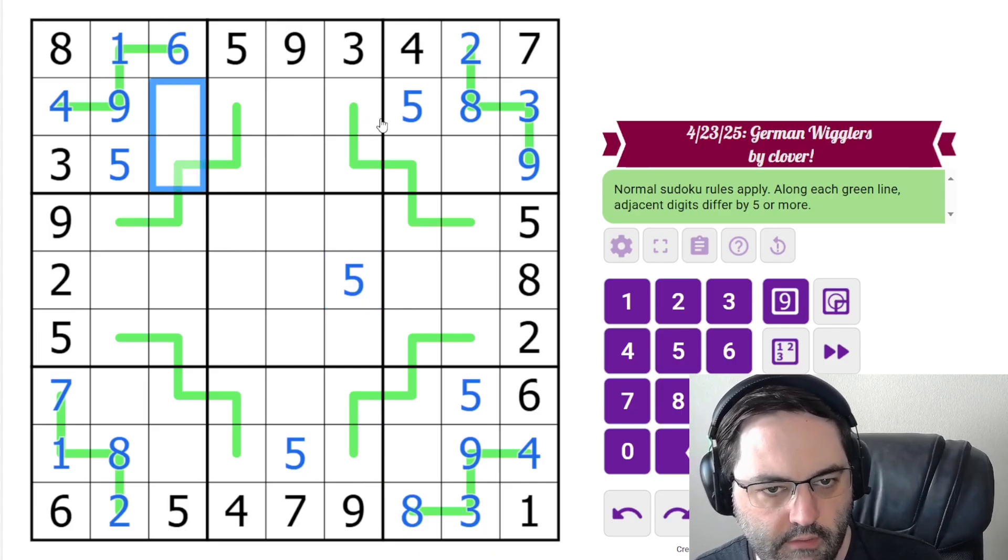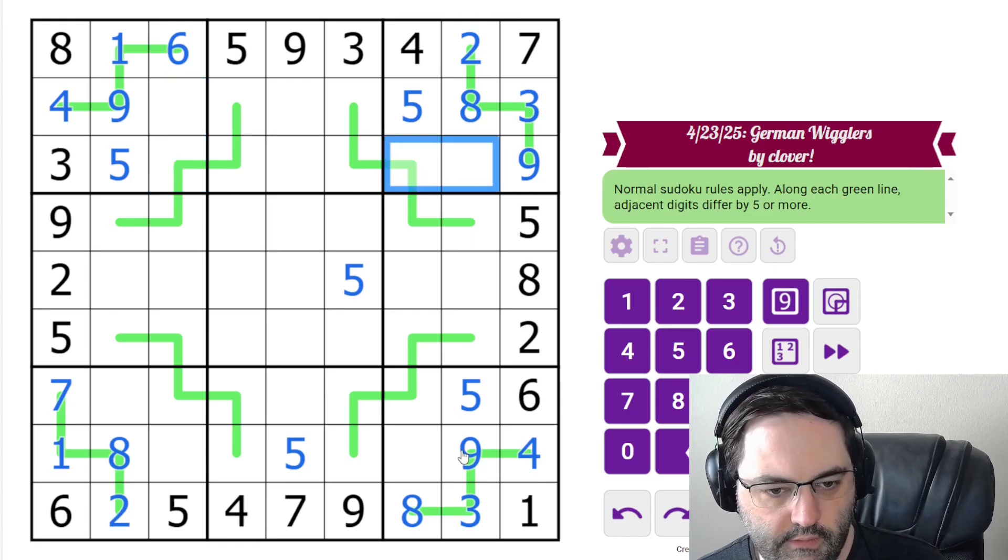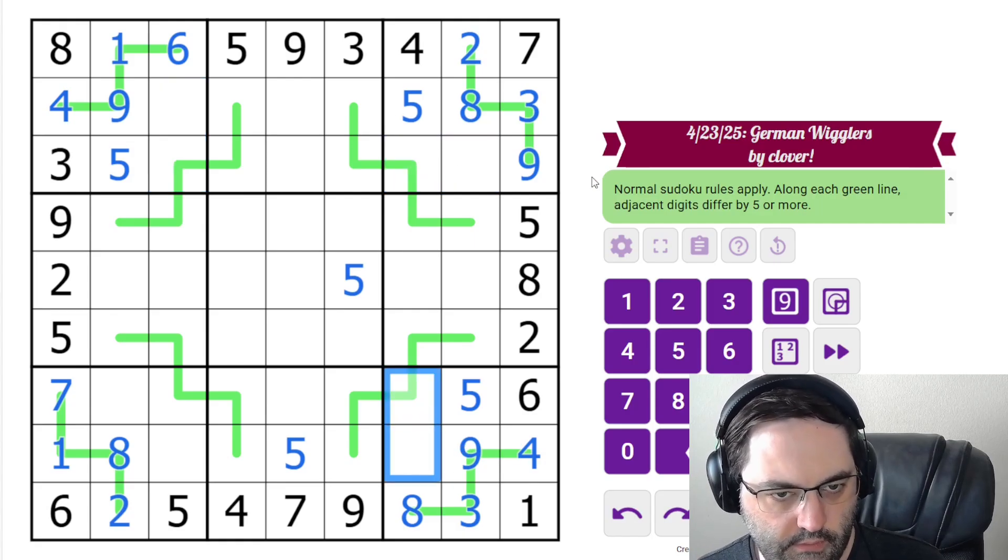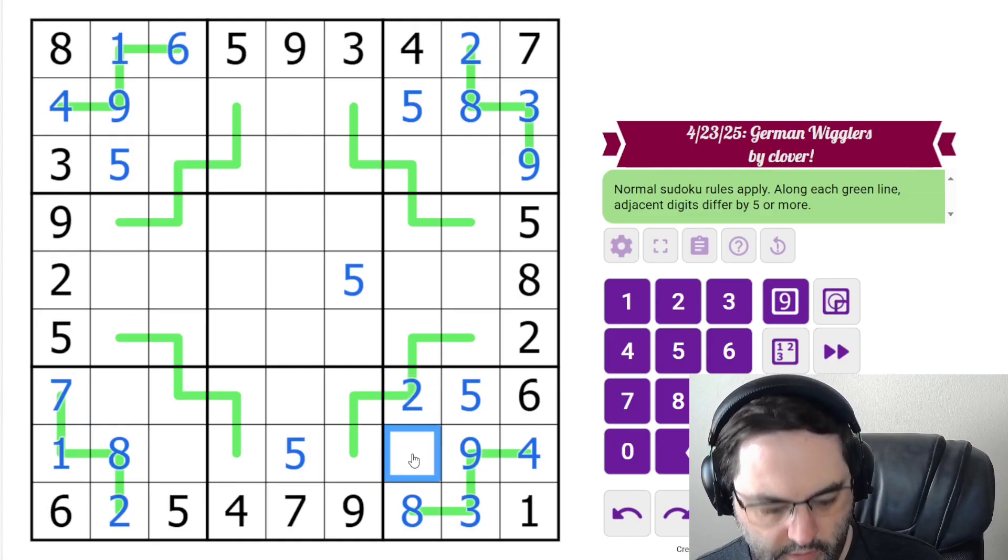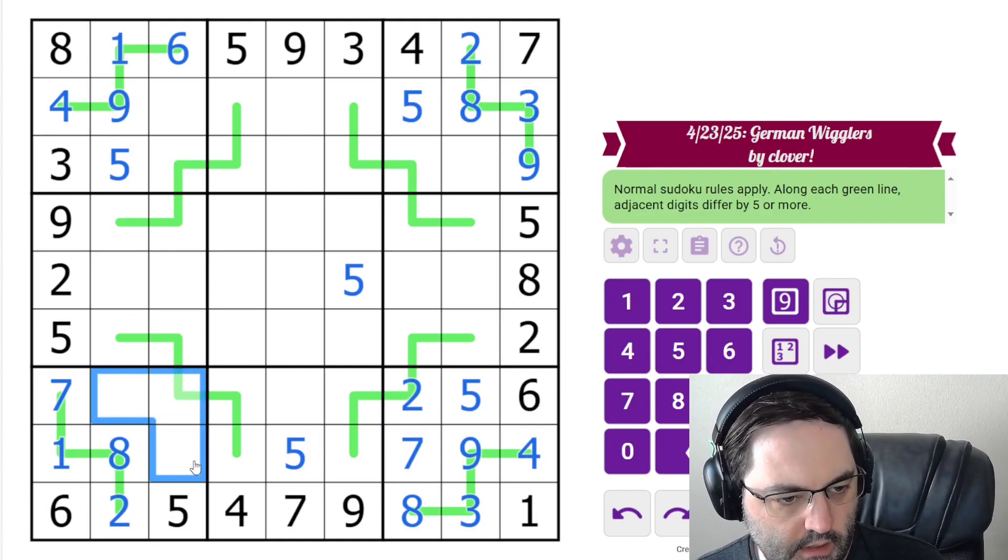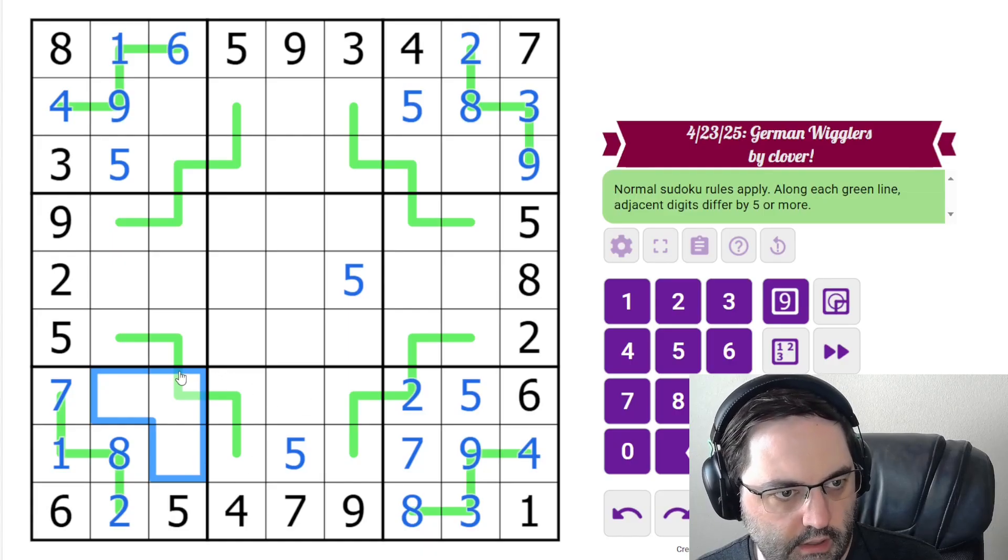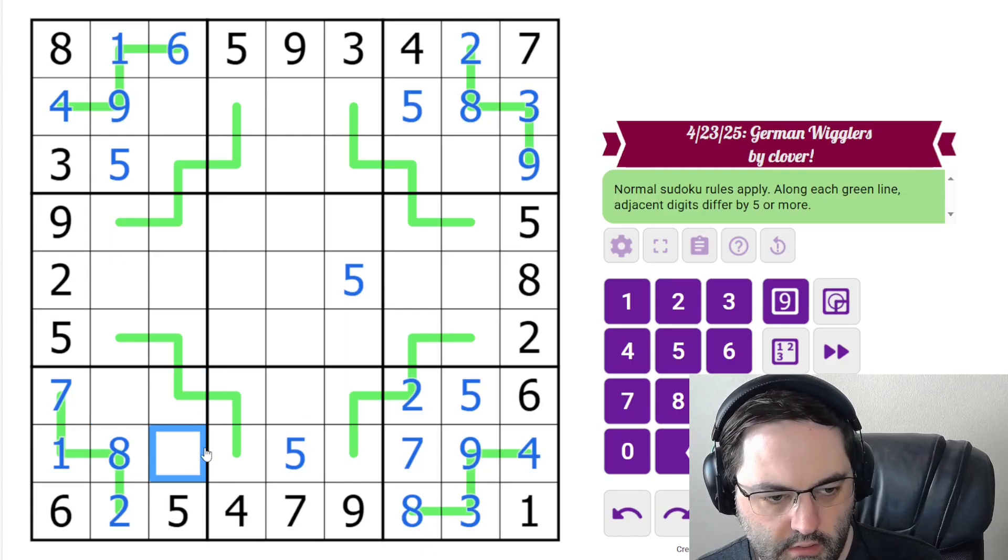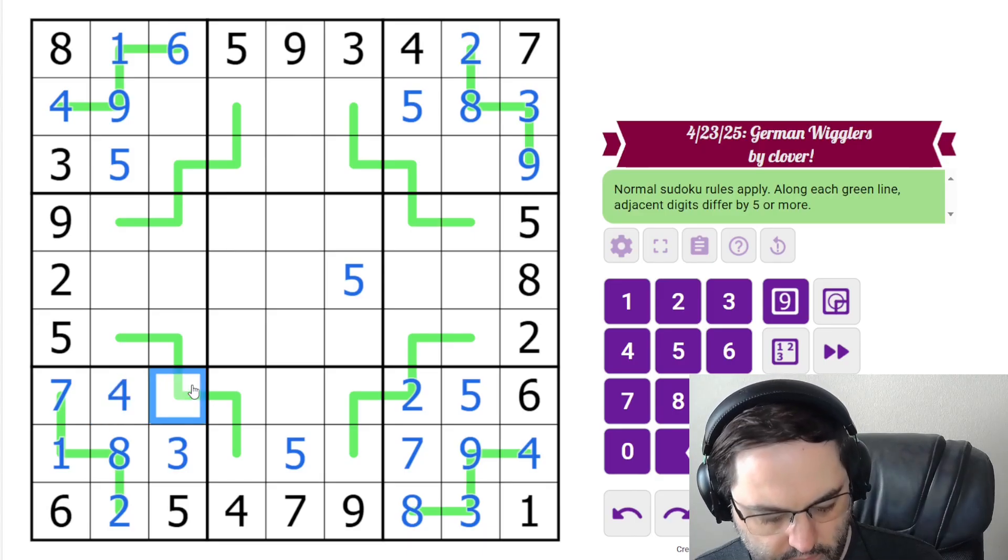These are 2 and 7. These are 1 and 6. These are 2 and 7 again. And that one is resolved, but that's 7. And then these are 3, 4, and 9. That's got to be the 3 and 4 and 9.